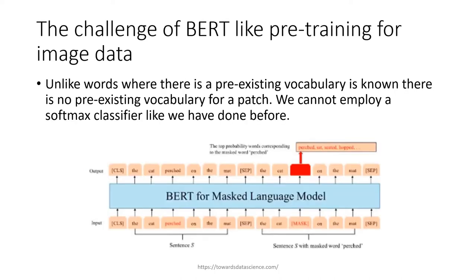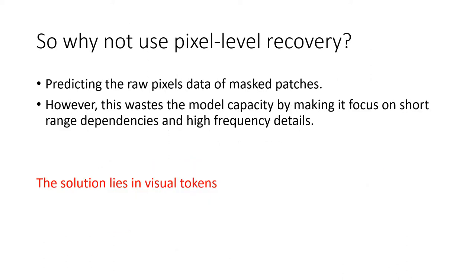Let's dive deeper into the challenge. There are no pre-existing vocabulary for a patch which has been masked out in an image. For a word, it can be found in a dictionary, but there is no equivalent of a dictionary for an image. Why not use pixel-level encoding? That is one solution — to predict raw pixel data of the masked patches. However, this method is ineffective as it wastes the model capacity by making it focus on short-range dependencies and high-frequency details.